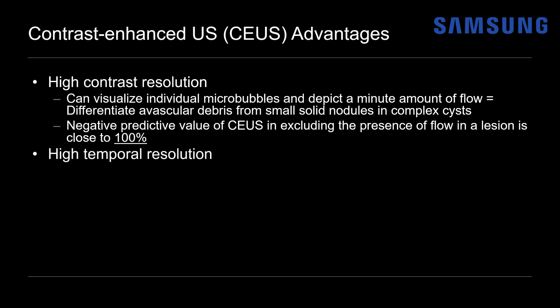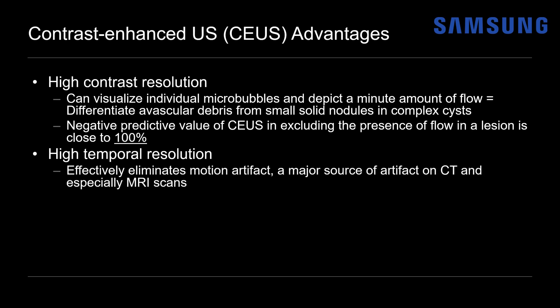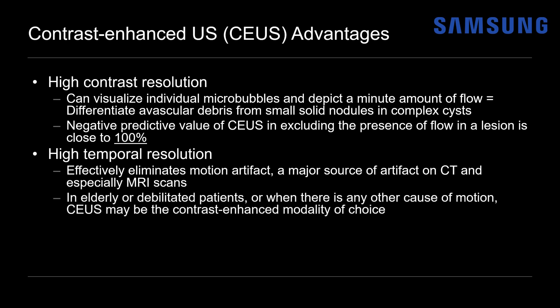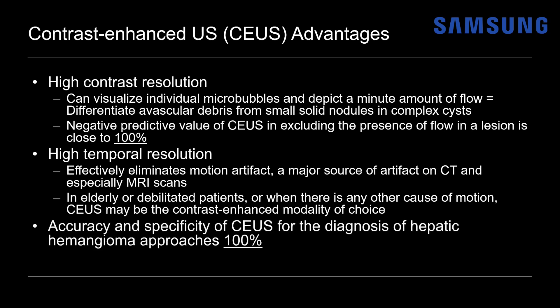The temporal resolution is extremely high for contrast ultrasound, which eliminates motion artifact — a big problem on CT and especially MRI. It's great for elderly or debilitated patients who have trouble staying still on MRI, making contrast ultrasound the contrast modality of choice for further evaluation. Regarding hemangioma, the accuracy and specificity of contrast ultrasound also approaches 100%.